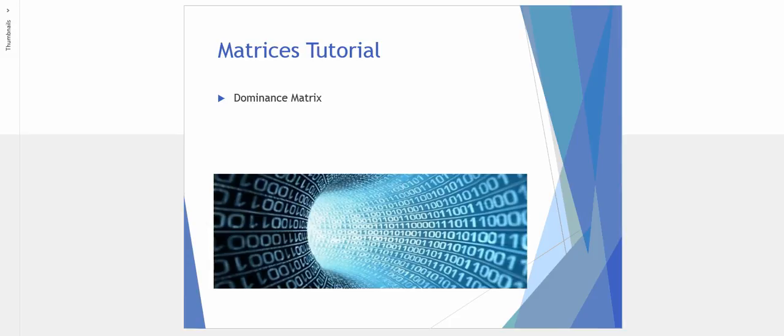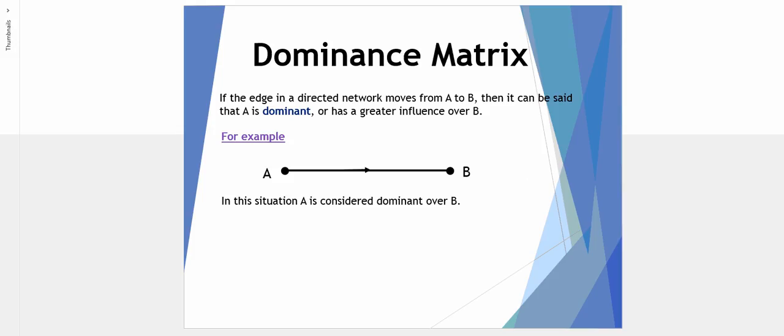Welcome to another Further Maths tutorial. Today we'll be looking at dominance matrices. If the edge of a directed network moves from A to B, as is the case here, there's an arrow clearly going from A to B, we say that vertex A is dominant over vertex B.